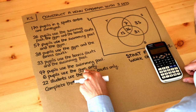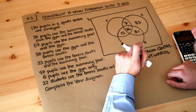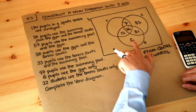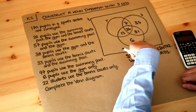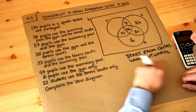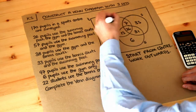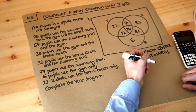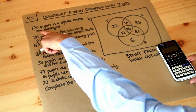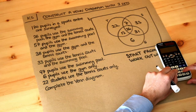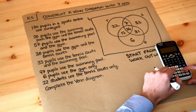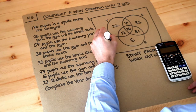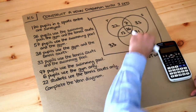Six pupils use the gym only, so we put 6 in the region exclusively inside the G circle with no overlap. Similarly, 22 students use the tennis courts only, so we put 22 in the exclusive T region. For the final region outside all circles — students who don't use any of the three facilities — we add up all other numbers: 22 + 7 + 33 + 12 + 26 + 31 + 6 = 137, then 170 minus 137 gives us 33 students who don't use any of those facilities. All numbers now add up to 170.